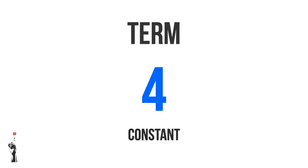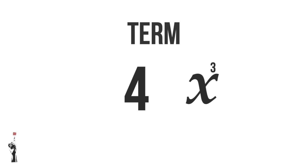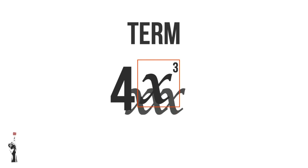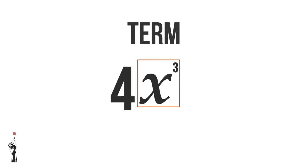Let's break down terms even further. We're going to work with 4X cubed. If we look at X cubed, what does it mean? X cubed means that we have X multiplied by X multiplied by X, which is why we have X to the power of 3.